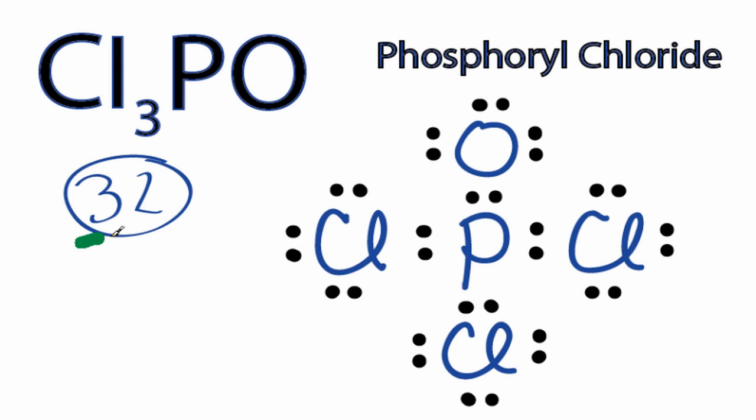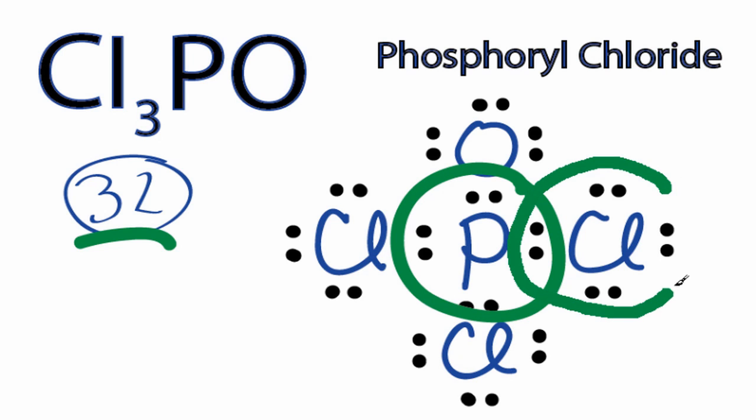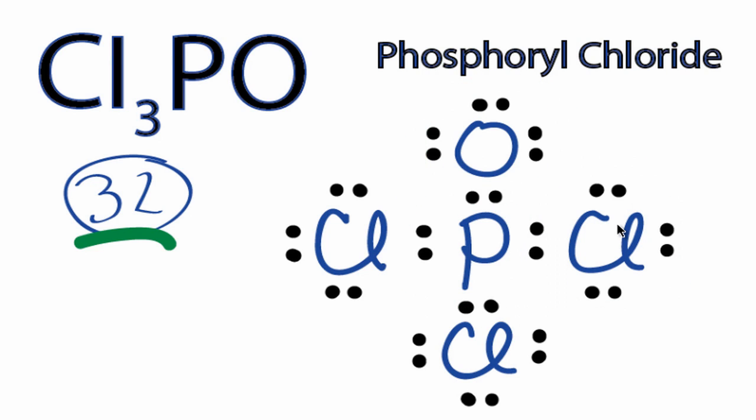At this point, we've used all 32 valence electrons, and each of the atoms has an octet. The Phosphorus has an octet, the Chlorines all have octets, and the Oxygen also has an octet. So it looks like this is a pretty good Lewis structure for Cl3PO.